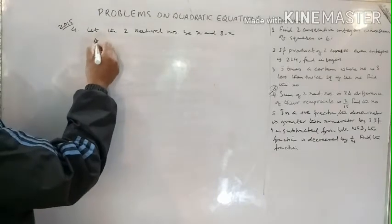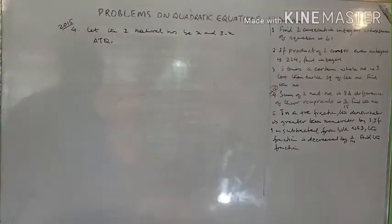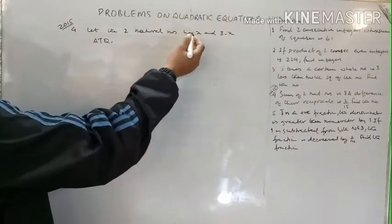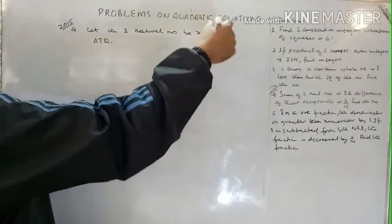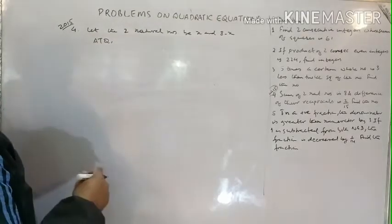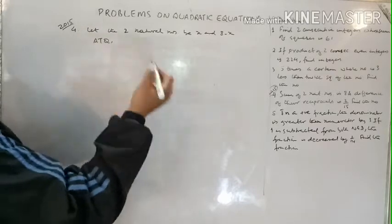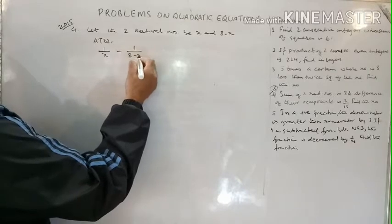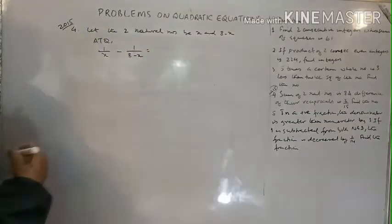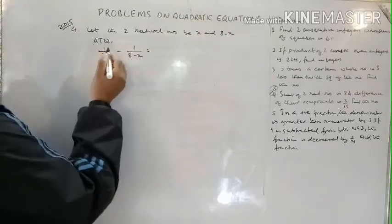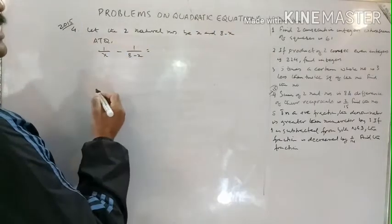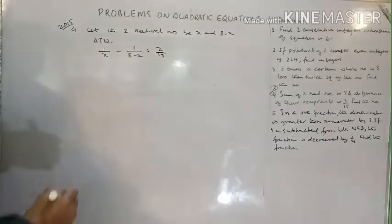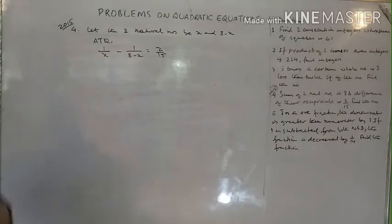According to the question, the difference of their reciprocals is 2/15. The reciprocal of x is 1/x and the reciprocal of (8 minus x) is 1/(8 minus x). So the equation is: 1/x minus 1/(8 minus x) equals 2/15.